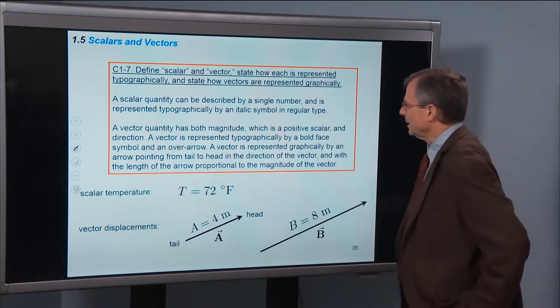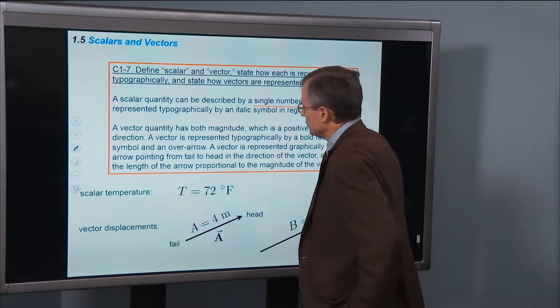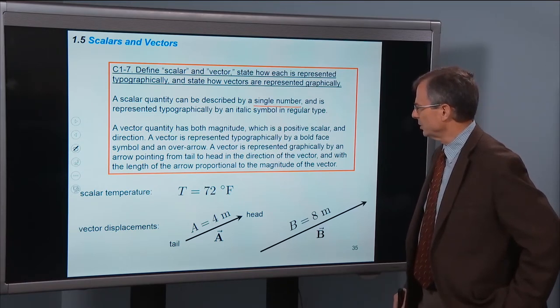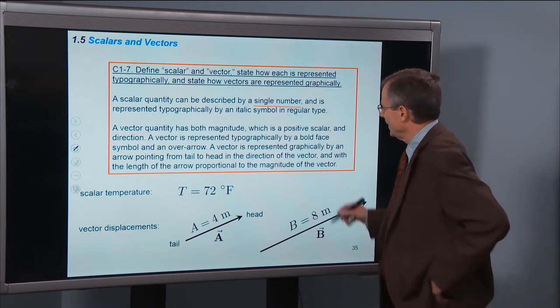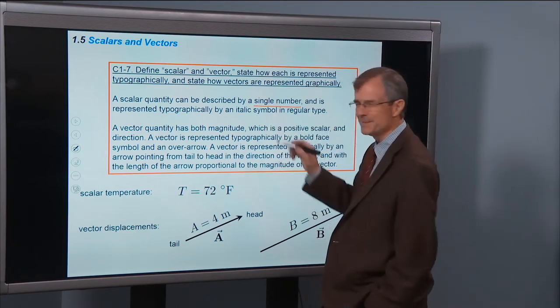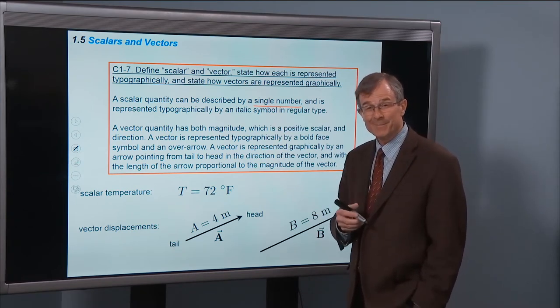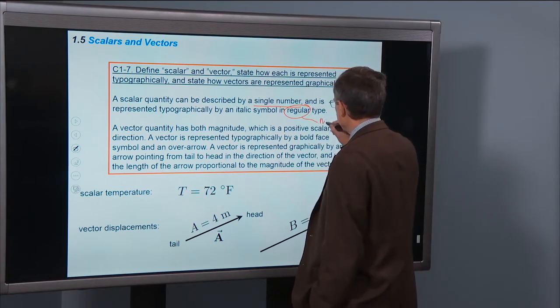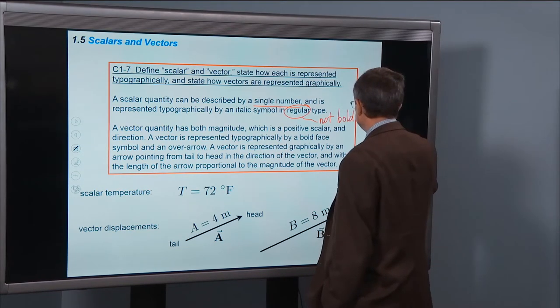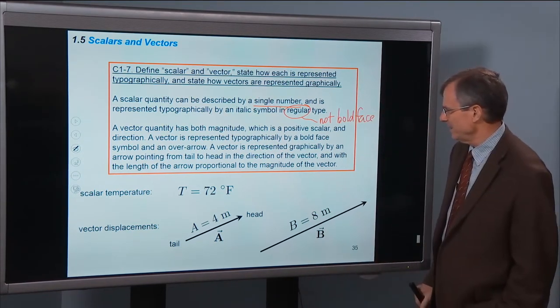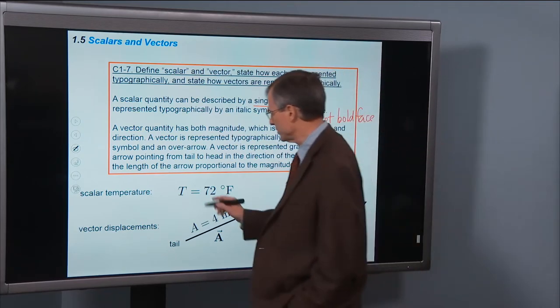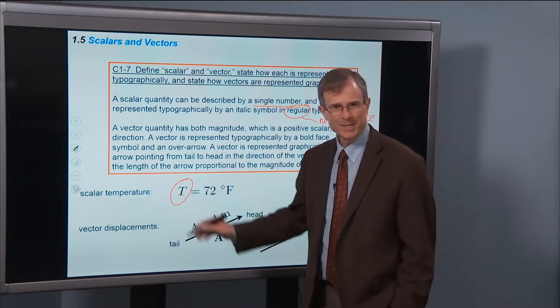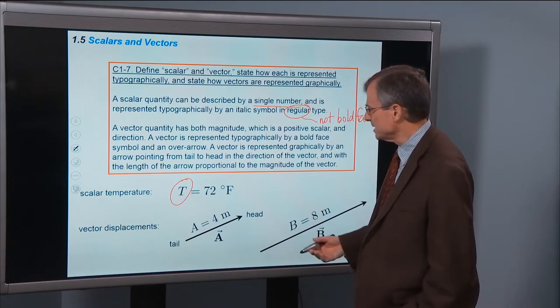A scalar quantity can be described by a single number and is represented typographically by an italic symbol in regular type. By regular, I mean it's not bold face type. Italic type is slanted type. So an example of a scalar is the temperature. It's represented by a capital T in italics, slanted, and it's not bold face. That's an example of a scalar.